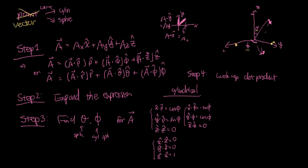Let's start by looking at some obvious ones. For rho, X and Y, you can see you're going to have your cosine phi and sine phi relationship, and Z dot rho is always going to be zero — they're always perpendicular. Similarly, X and Y are always perpendicular to Z, so any projection with Z is going to be zero, and Z dot Z is going to be one.